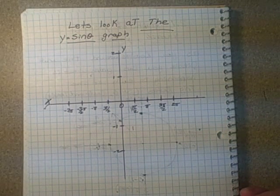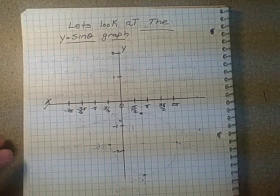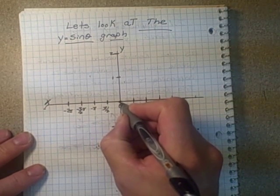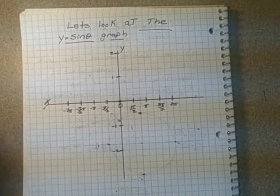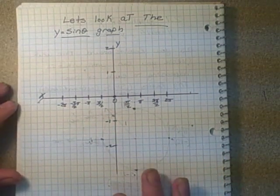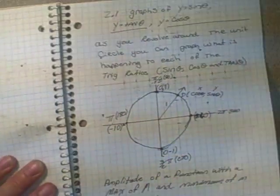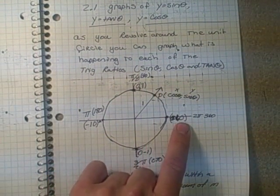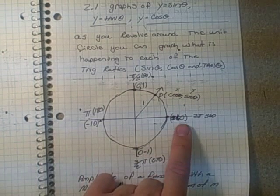So as we go around it, as we start at zero for the sine graph, we know that at zero, we have a point of zero. Remembering the unit circle, if I flip back here real quick to the unit circle, if I'm right there, that second point, y point, the sine point is zero.